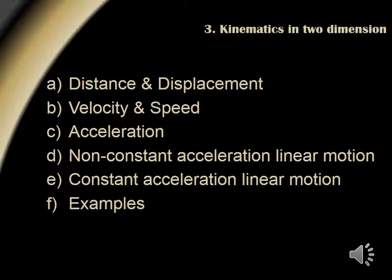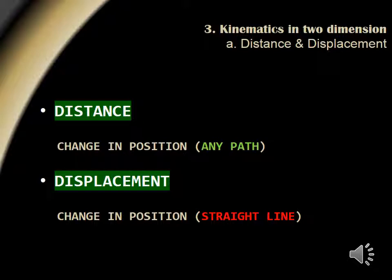For the third part of our lecture, we'll look at kinematics in two dimensions. We'll cover distance, displacement, velocity and speed, acceleration, both non-constant and constant, and we'll do some examples. Distance is defined as a change in position directed in any path from the initial position to the final position. Displacement is defined as a change in position directed in a straight line path from the initial position to the final position.